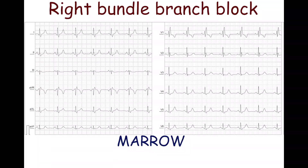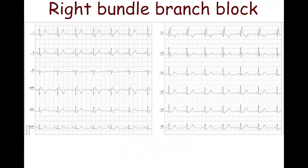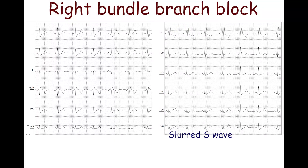MaRoW serves as a mnemonic device for RBBB. The letters M and W in the mnemonic correspond to an M-shaped QRS complex in lead V1 and a W-shaped complex in lead V6, respectively. Right bundle branch block is characterized by an RSR' M-shaped pattern in leads V1, V2, and a wide, slurred S wave in leads V5 and V6.